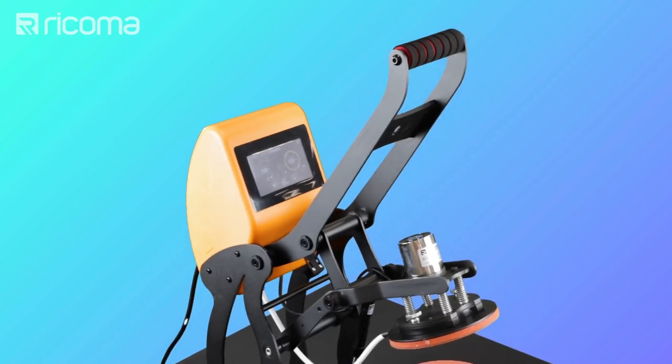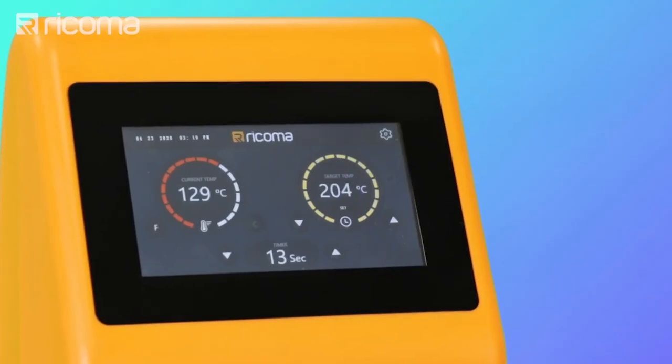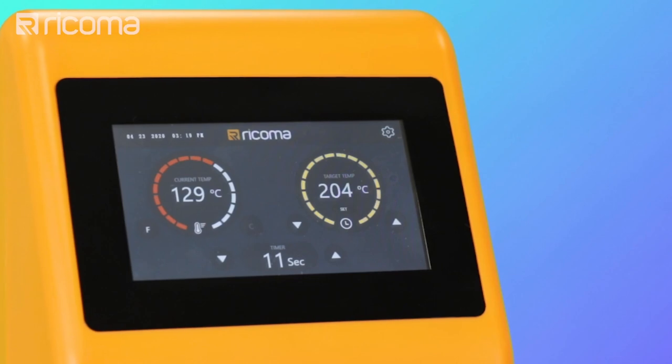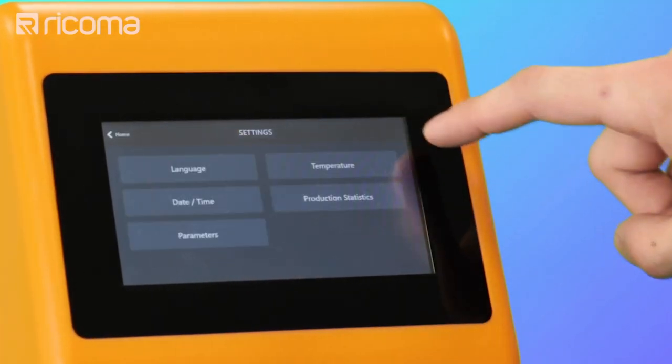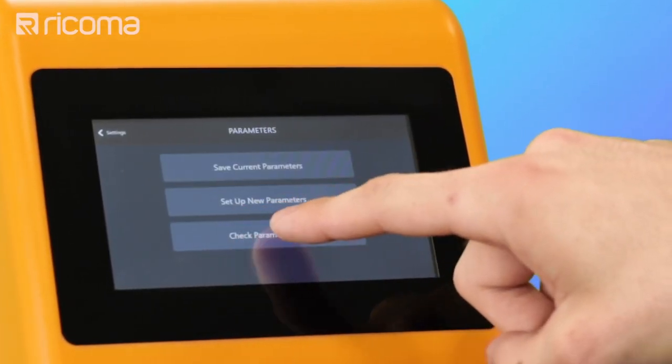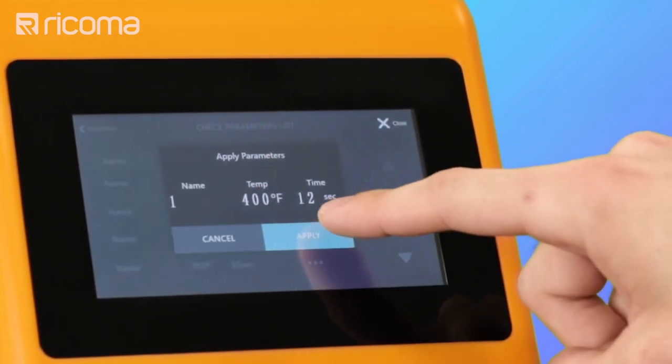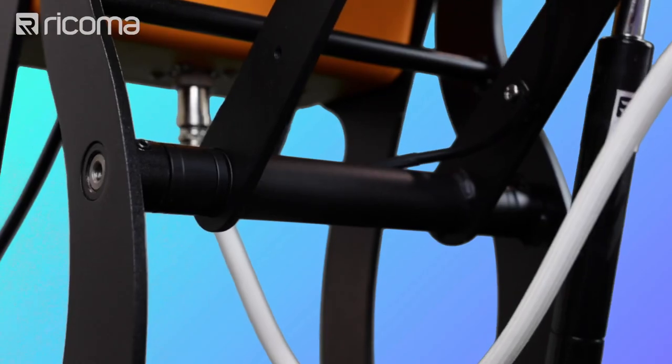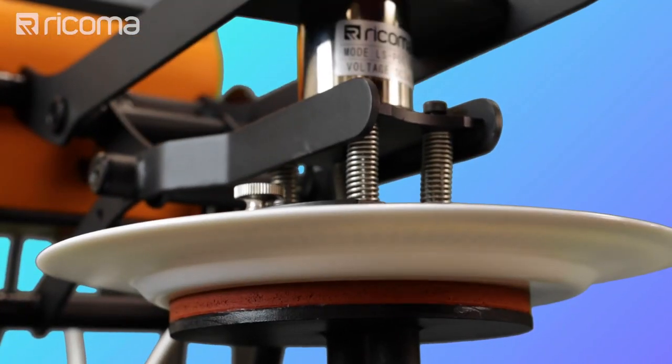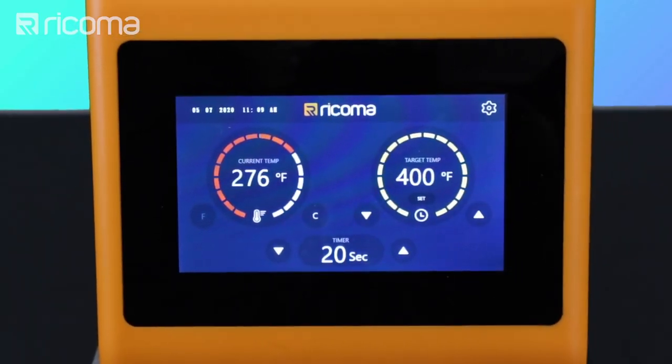The 5-inch touchscreen displays important information about the job you're running, including the timer and temperature. You can even use the screen to preset heating times and temperatures for future projects through the parameter settings options. This will help you save time setting up your next run of plates, since all the settings have been saved in the machine's memory.